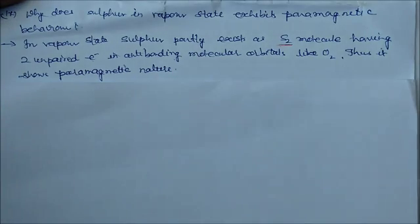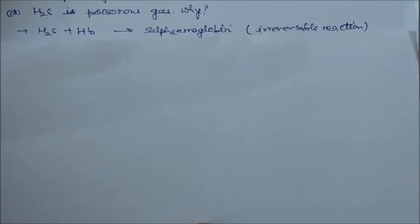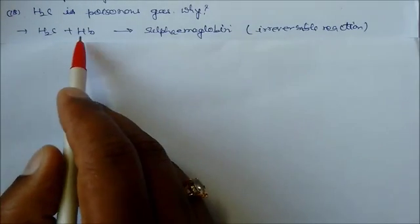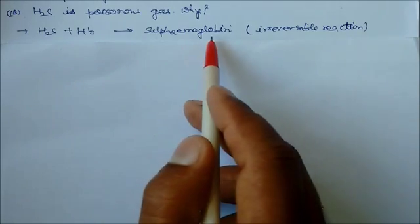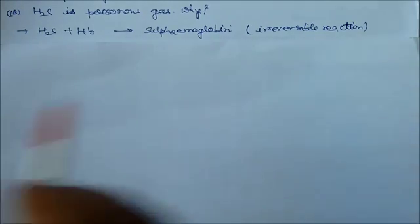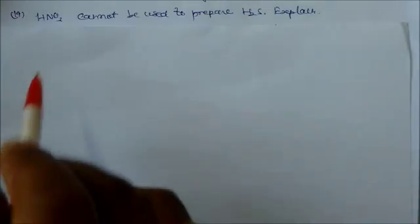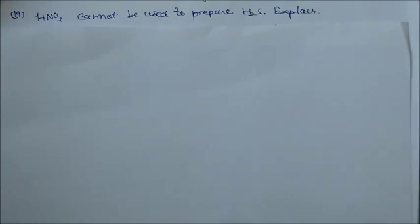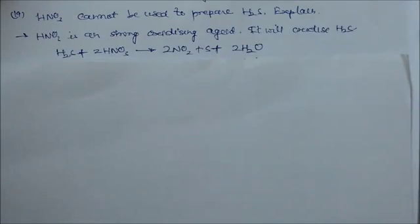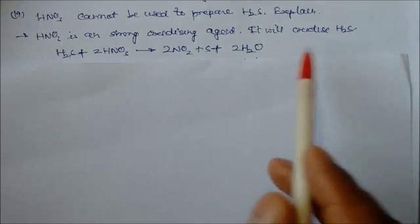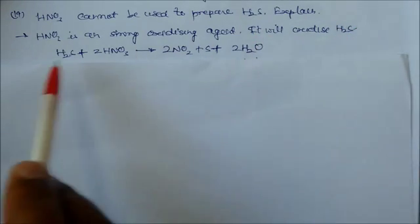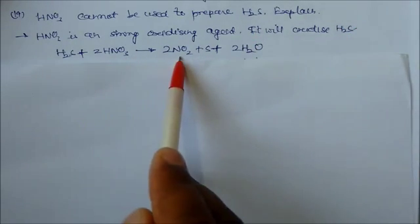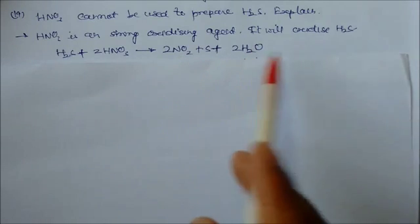Hydrogen sulfide is a poisonous gas. Why? Because it combines with hemoglobin to form sulfhemoglobin, and this is an irreversible reaction. Nitric acid cannot be used to prepare H2S because nitric acid is a strong oxidizing agent. It will oxidize H2S to nitrogen dioxide, sulfur, and water.